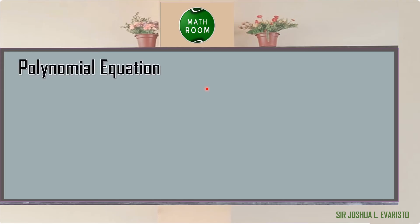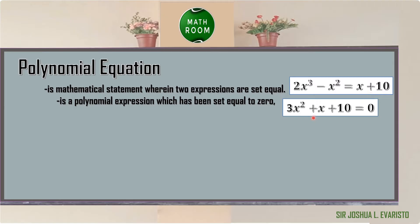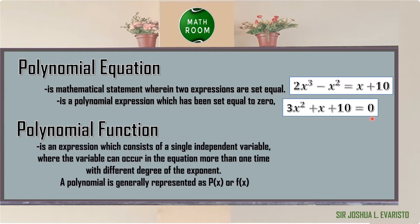We already discussed polynomial equations in the previous lesson. A polynomial equation is a mathematical statement where two expressions are set equal, for example 2x³ − x² = x + 10. A polynomial equation can also be a polynomial expression set equal to zero, for example 3x² + x + 10 = 0.